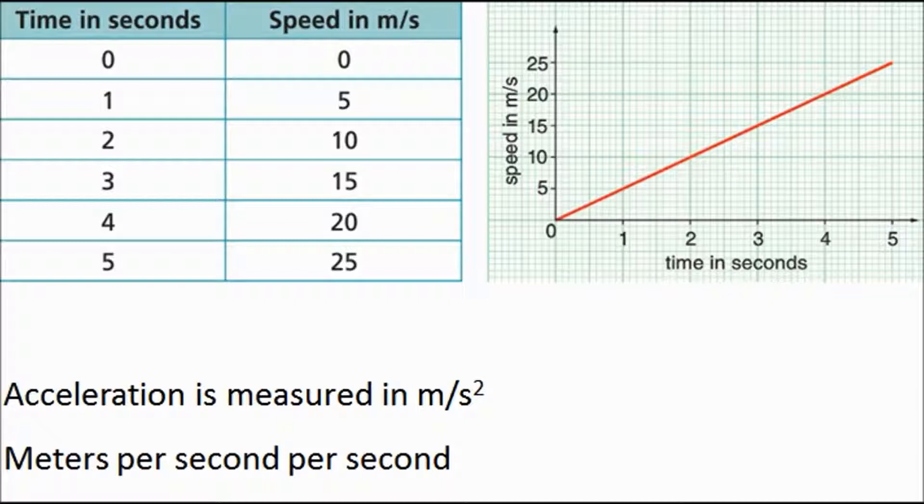So in the last video on speed time graphs, I introduced you to a quite unusual unit. And that unusual unit was meters per second squared. That's quite strange, it's not like anything you've come across before. And essentially, meters per second squared is the same as saying meters per second per second. Trouble is, that also sounds quite odd, so let me try and explain it.